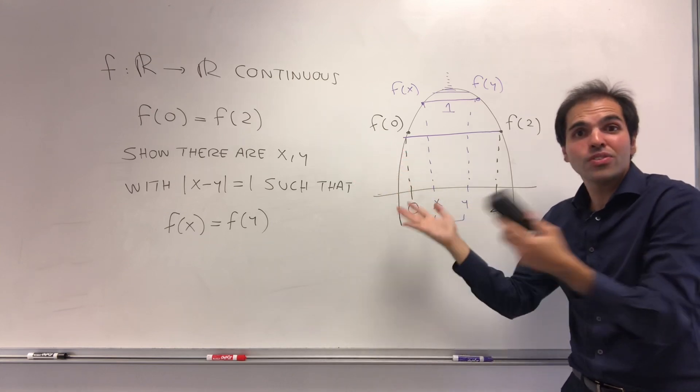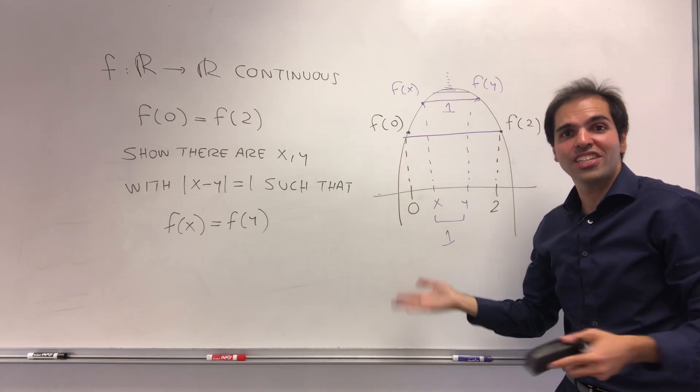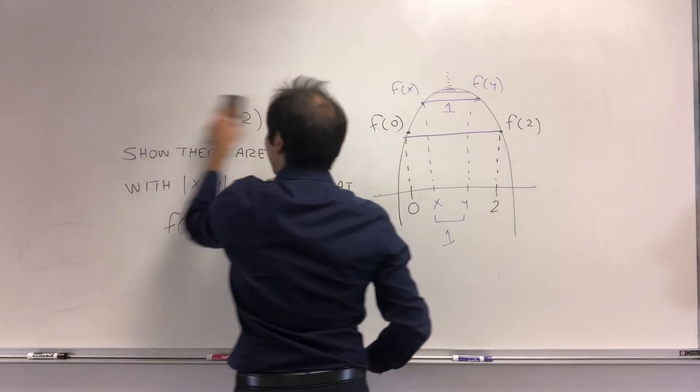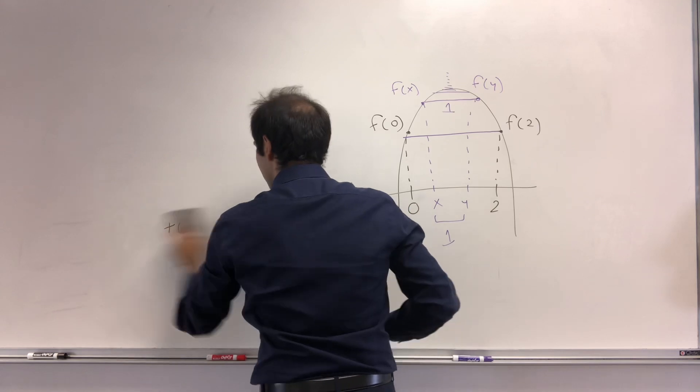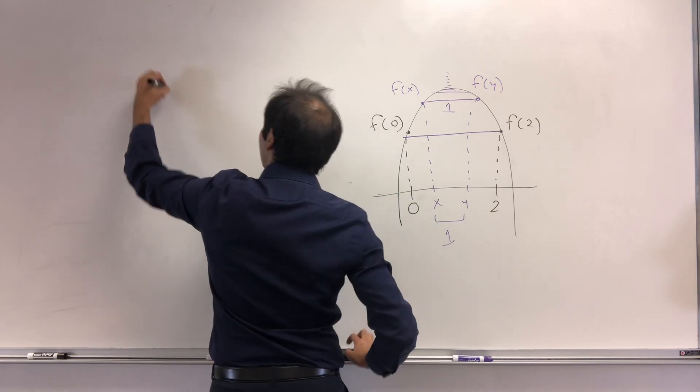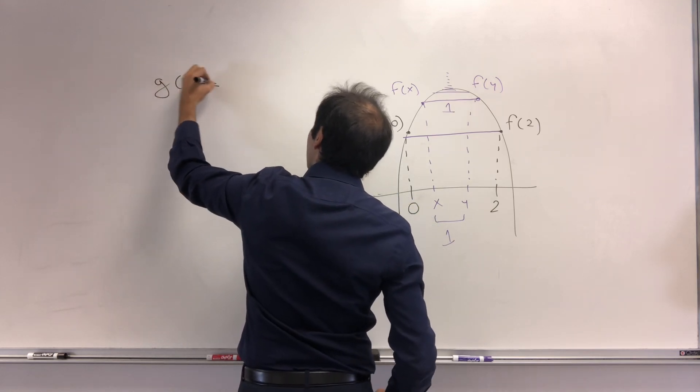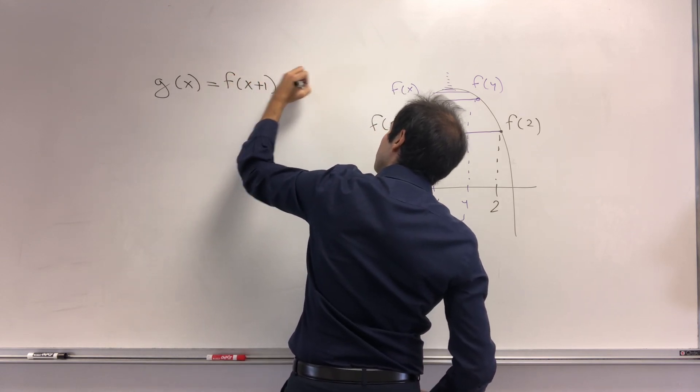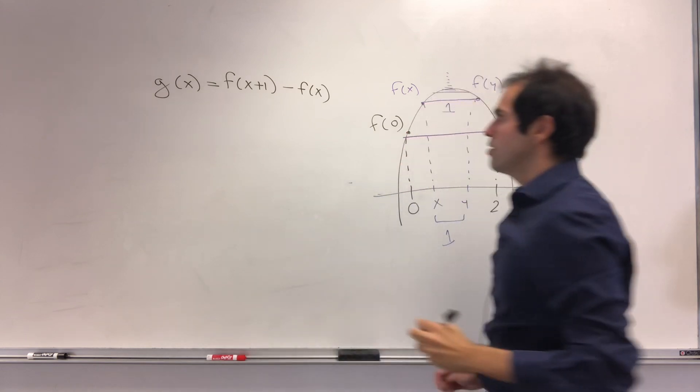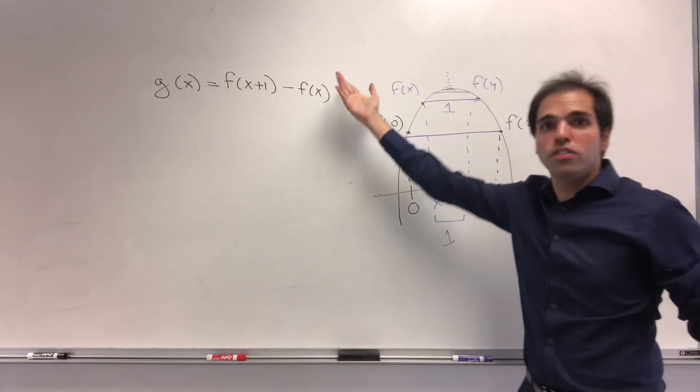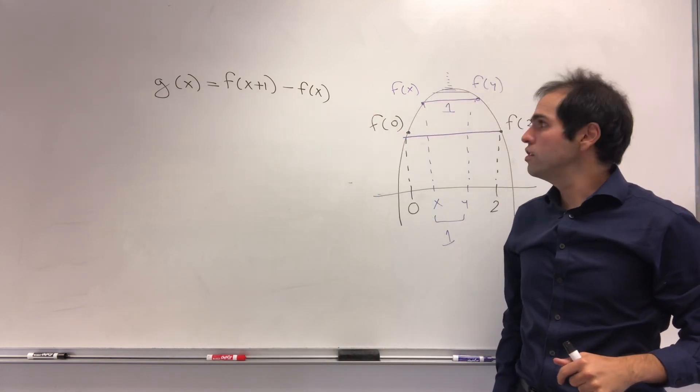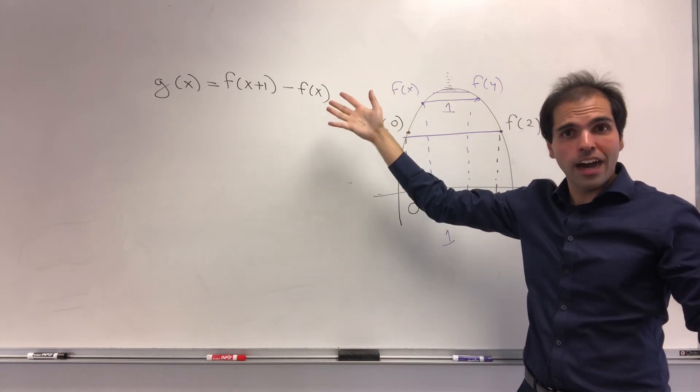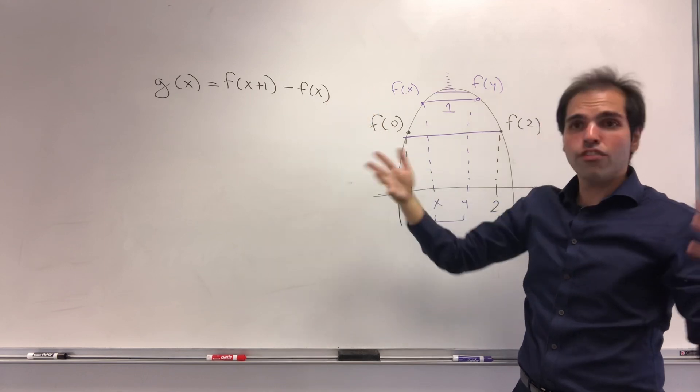This turns out to be just a simple application of the intermediate value theorem. All we want to do is define a helper function. The helper function is g(x) = f(x+1) - f(x). It's continuous as a difference of two continuous functions, and we want to apply the IVT to g.